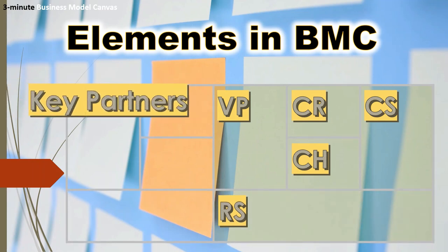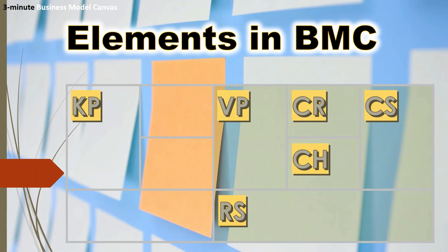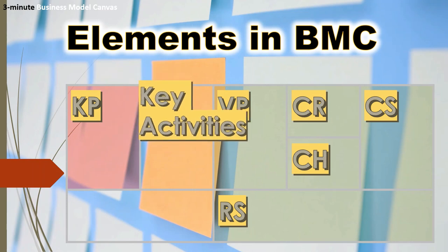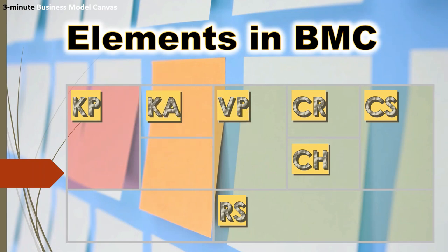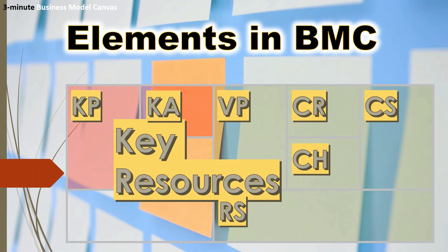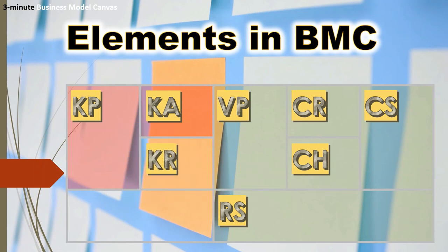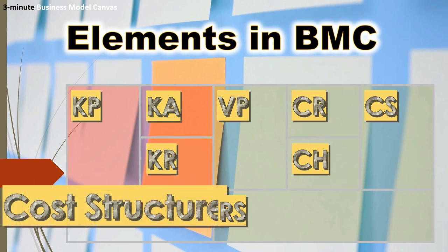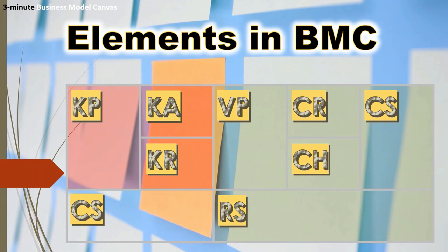At the back, we have Key Partners, which can be your suppliers or business partners in production. There are Key Activities, which represent your key competences in delivering your value propositions. Key Resources, or KR, are the key resources needed to create your value propositions. And lastly, Cost Structure is driven by the costs that may incur from the three elements above it.